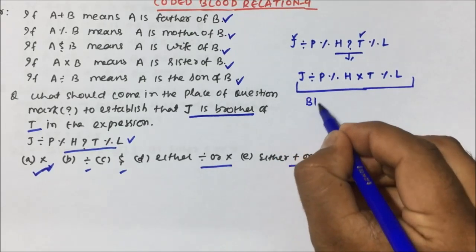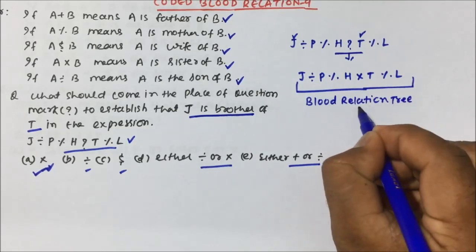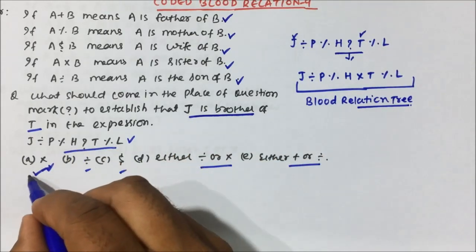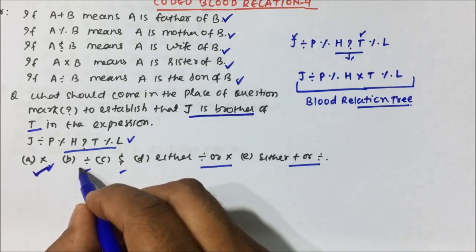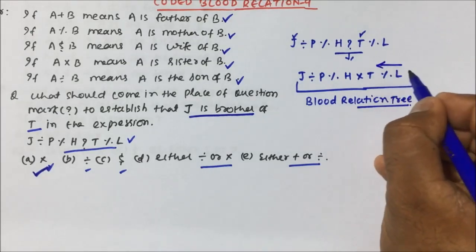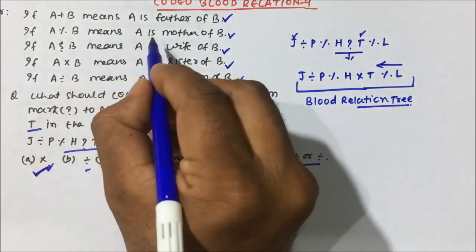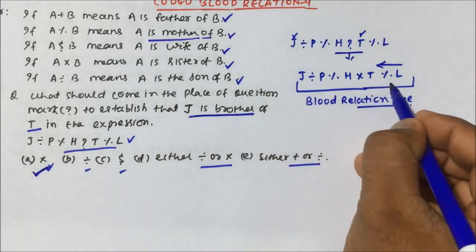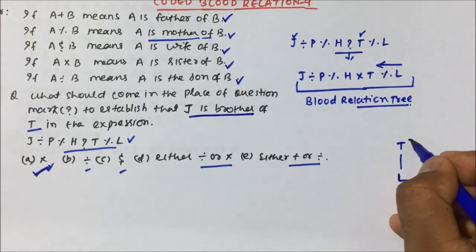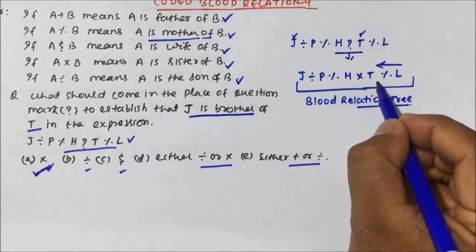Now I have to draw a blood relation tree. We always draw the blood relation tree from the right end. T percentage L means T is mother of L, so T will be female — indicated with a minus sign. Then H cross T means H is sister of T.